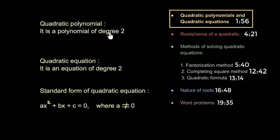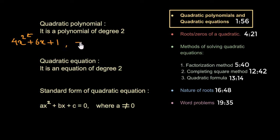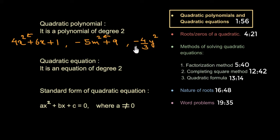Let's start with our first topic: what do we mean by a quadratic polynomial and a quadratic equation. A polynomial of degree two would be a quadratic polynomial. For example, 4x² + 6x + 1 — the degree of this polynomial is two, hence this would be a quadratic polynomial. Another example: −5m² + 9 — the degree is still two, so this would also be a quadratic polynomial. Even monomials can be quadratic; for example, −(4/3)y² has degree two, hence it would be quadratic.